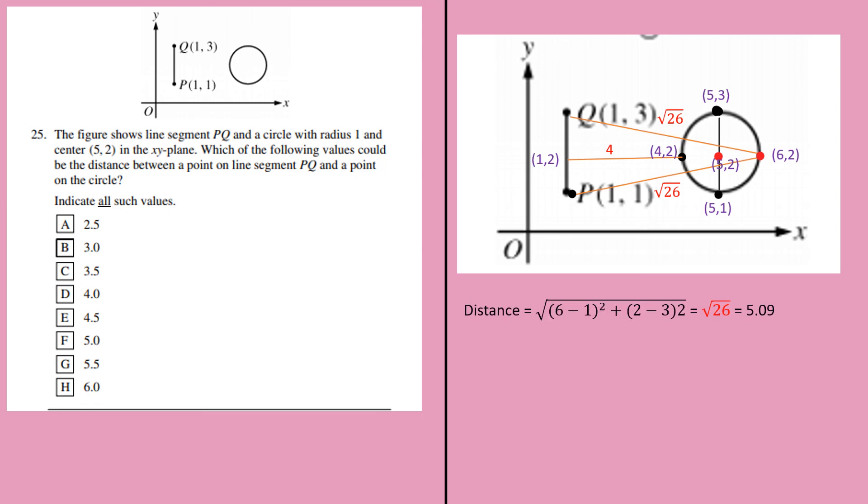And the maximum distance will be between Q and 6, 2 or P and 6, 2. So the maximum distance is 6 minus 1 whole square, 2 minus 3 whole square, or 2 minus 1 whole square, which is square root of 26, 5.09, which is both Q to 6, 2 and P to 6, 2 will give you square root of 26. And the minimum distance between 1, 2 to 4, 2, which is 3.